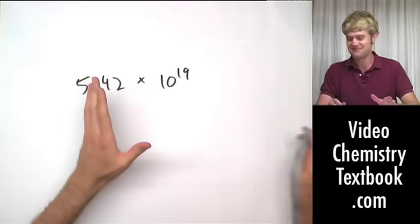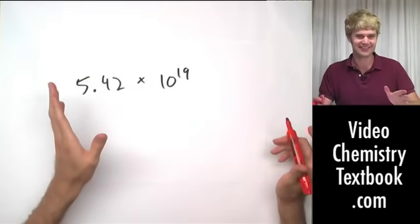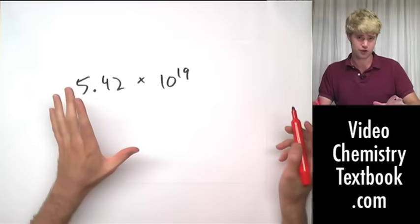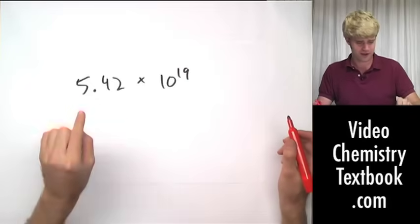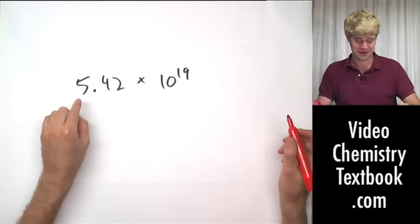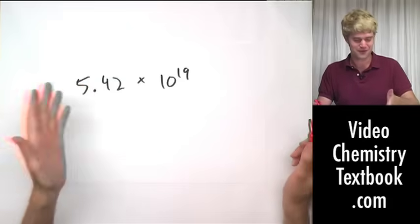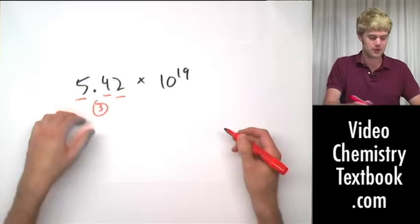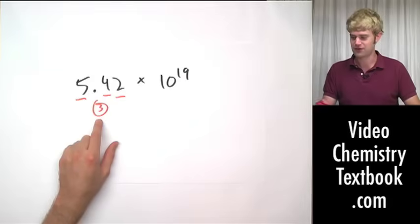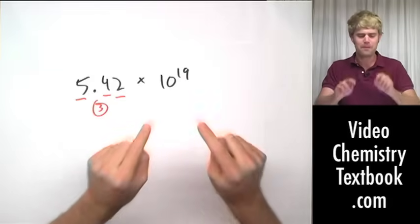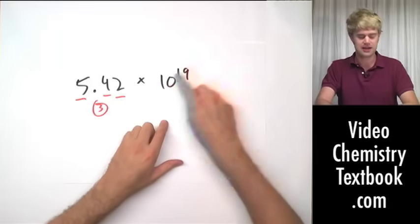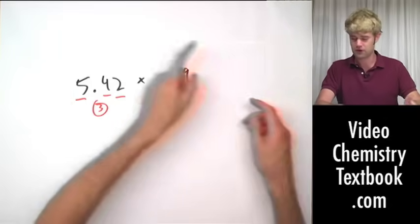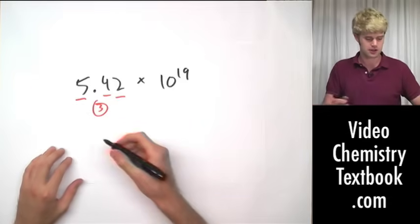I didn't make that up — it's actually a word, you can look it up. So all we want to do is concentrate our energy on the mantissa. So 5.42 — all of them are non-zero digits, which means that this number has three significant figures. That's it. We don't pay any attention to the 10 raised to the 19th. We cross it off when we're looking at how many significant figures a scientific notation expression has.